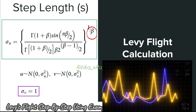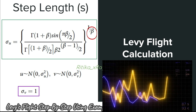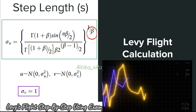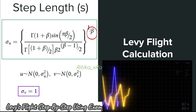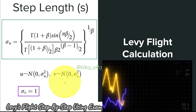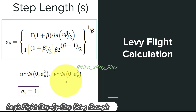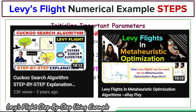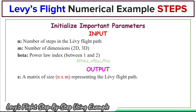When beta has a higher value it means smaller steps, and when beta has a lower value it means larger steps. u and v are normally distributed, and first we calculate sigma_u using the given equation. For more details about Lévy's flight and these equations, we can check the previous videos where everything is discussed in detail.